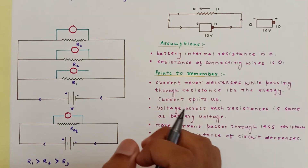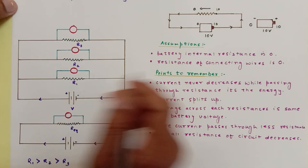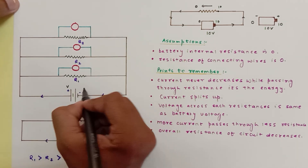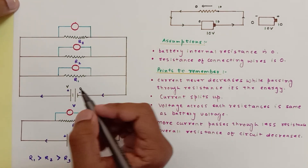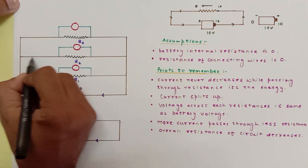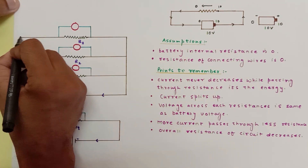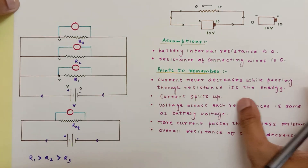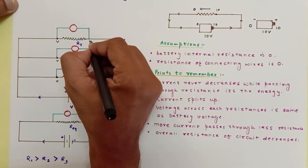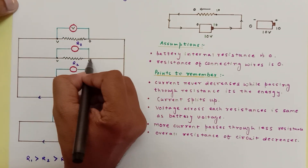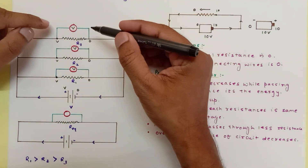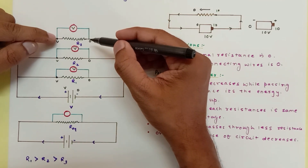Now let's apply the battery concept to the parallel circuit. The potential difference across the two terminals is V — consider this side as V and the other as 0. Since V is connected directly to each resistor's terminal, the potential at each top terminal is V. The 0 is connected to each bottom terminal. So the potential difference across each resistor is V. Voltmeters always show the potential difference between the terminals where they are connected.